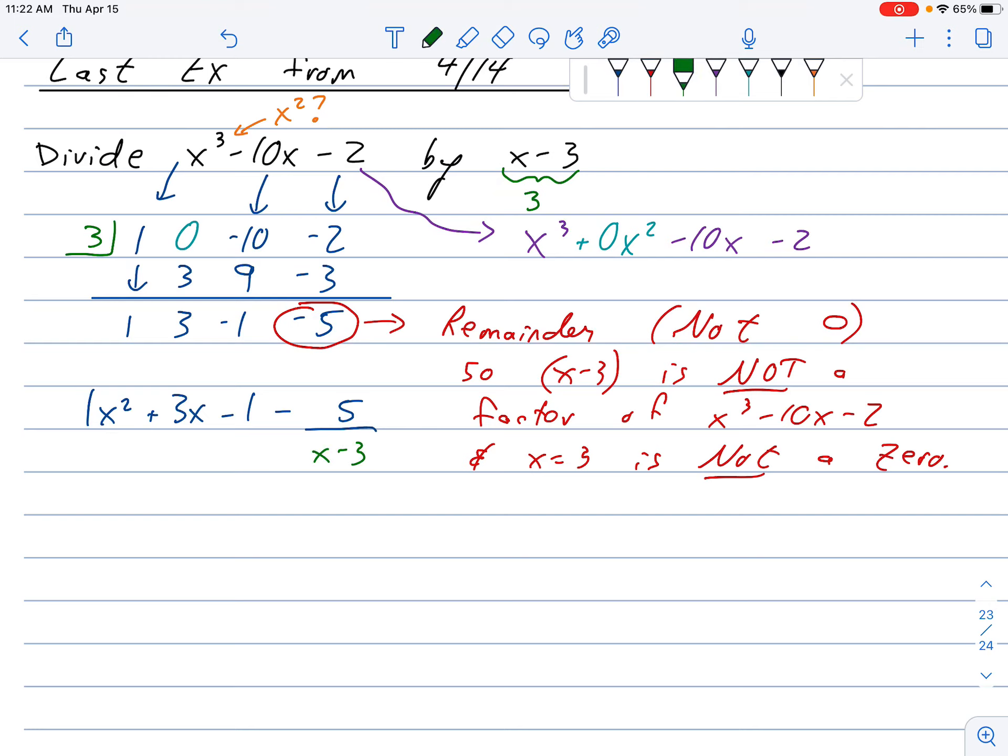Which we always write as minus 5 over that divisor. That x minus 3 we started with up here. 5 is my remainder. There it is. I write it in red actually. And then I write it over my divisor. And that would be my total answer. And that was where I had ended the class.